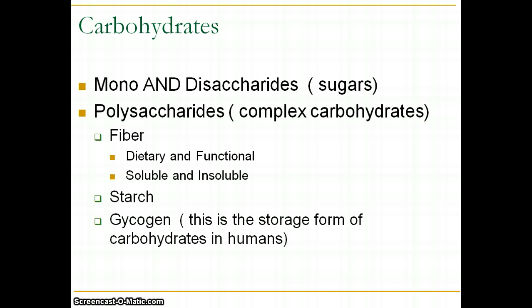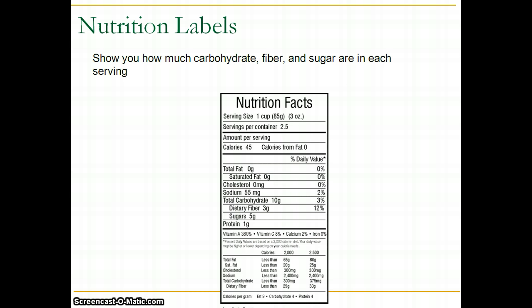When glycogen is stored in the muscles, it has to be used in the muscles. When it's stored in the liver, it can be re-released back into the bloodstream so that you can use it later in your brain, central nervous system, and red blood cells. In the liver, glycogen can be broken back down into glucose and go back into the bloodstream.